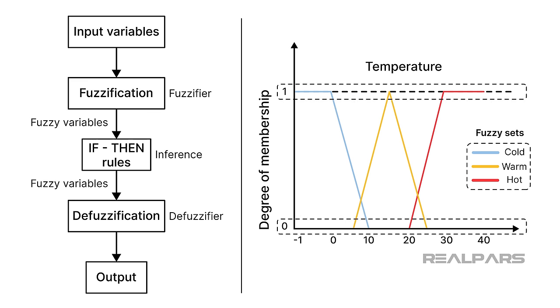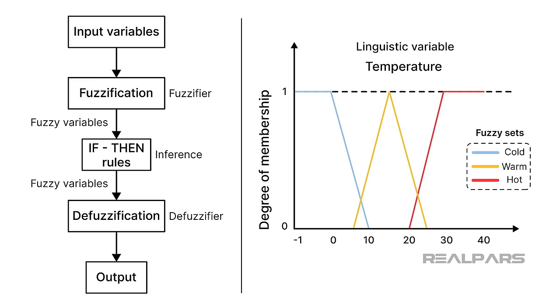What is a fuzzy set? A fuzzy set relates to membership linguistic variables. For example, a linguistic variable temperature might have fuzzy sets like hot, warm, and cold, each with its own membership function. These membership functions help quantify the fuzzy logic involved in making decisions based on linguistic variables rather than precise numerical values.